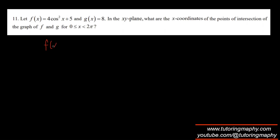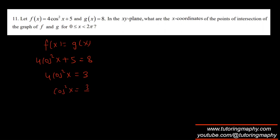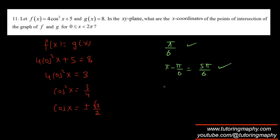Intersection of f and g: 4cos²(x) + 5 = 8. So 4cos²(x) = 3, meaning cos²(x) = 3/4. Taking the square root: cos(x) = ±√3/2. Solutions in all four quadrants; reference angle is π/6. Quadrant 1: π/6; quadrant 2: 5π/6; quadrant 3: 7π/6; quadrant 4: 11π/6.